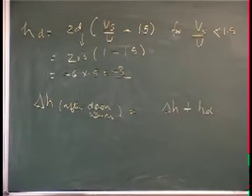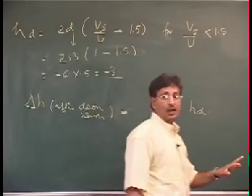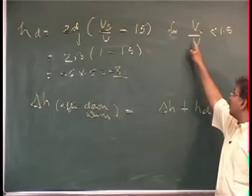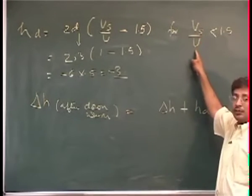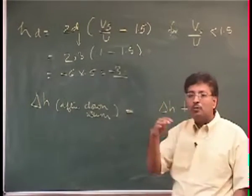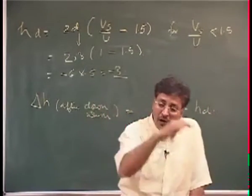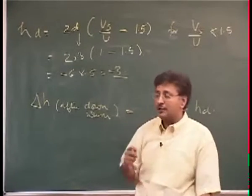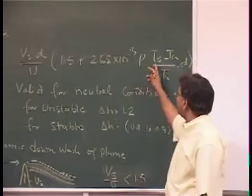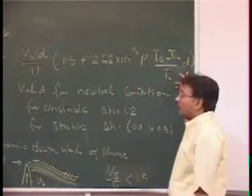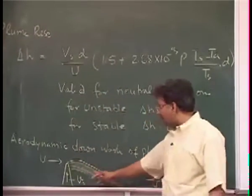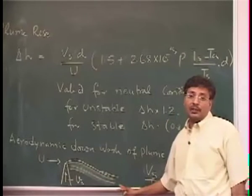Just remember: you do not apply this correction if the ratio of your exit velocity to horizontal wind speed is more than 1.5. It means the horizontal wind will not have the effect of bringing down the pollutants. This can be very important because you may have designed a good temperature and diameter, but if your exit velocity is not properly designed, you will unnecessarily cause serious problems to the people living in the area.